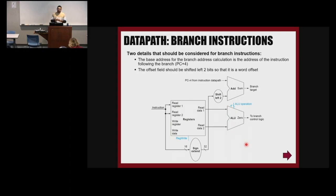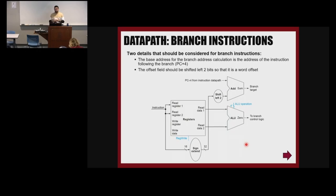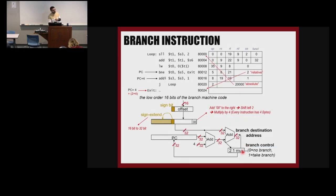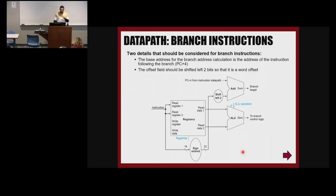We use the ALU for branches to compare two registers, and the way we do it is through subtraction. So if you have BEQ — branch equal — BEQ T0 and T1, we actually subtract T0 and T1. If the result is zero, it means they are equal; if it's not zero, they are not equal. Based on whether the result is zero or not zero, we can choose the path. That multiplexer uses this zero flag to choose between the two different paths. The ALU operation for branch is subtraction.